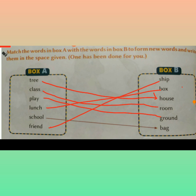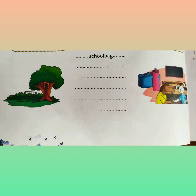Read once more. All of you read after me — once more: tree house, classroom, playground, lunch box, school bag, and friendship. All of you take your textbook and match these words from box A to box B. Then write these words in the space given in your textbook. Thank you.